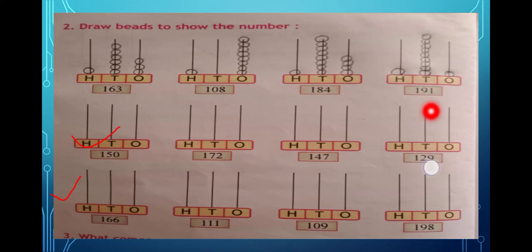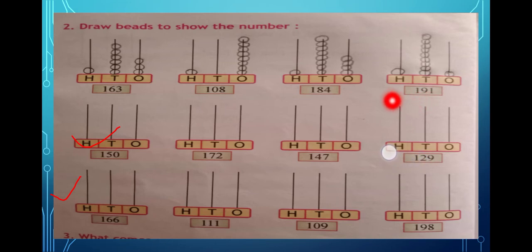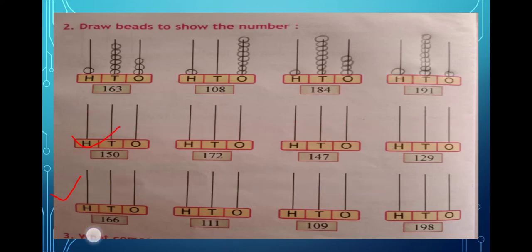For 184, hundreds place is one so draw one bead. For 191: ones place — draw one bead; tens place — draw nine beads; hundreds place — draw one bead. The remaining two questions on page six you please do in your textbook yourself.